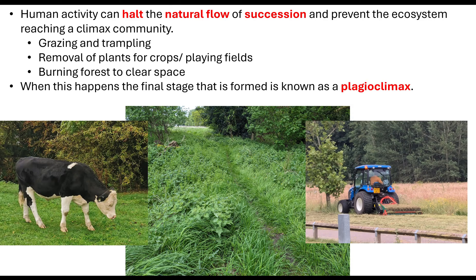Whatever the human activity given in your exam question, the important thing to note is that we are halting the natural flow of succession. Instead of reaching the climax community, we will reach a final stage known as the plagio-climax. We're talking about plants and animals, biodiversity, and changes within ecosystems. The natural flow of succession allows nutrients to be recycled, but we may also want to maintain biodiversity — such as putting cows into grassy areas in Cambridge — which actually maintains the biodiversity within those ecosystems.